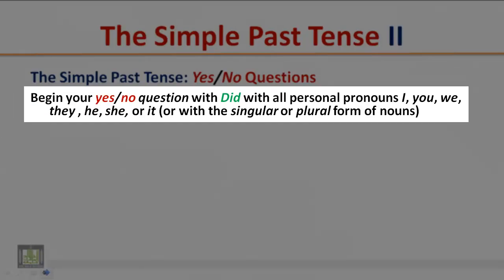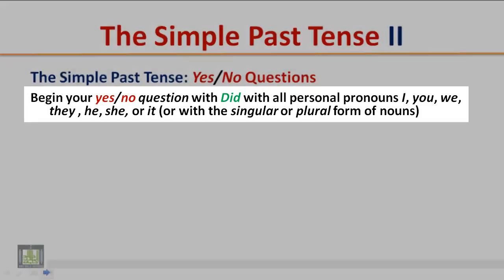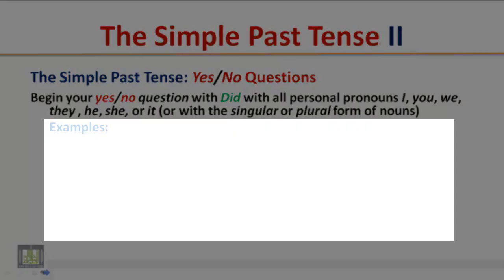Begin your Yes-No Question with 'Did' with all personal pronouns: I, You, We, They, He, She, or It — or with the singular or plural form of nouns.